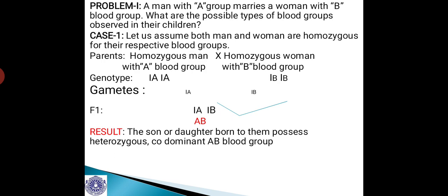Case 1: let us assume both man and woman are homozygous for their respective blood groups. Parents are a homozygous man with A blood group and a homozygous woman with B blood group. Their genotypes are IAIA and IBIB respectively. The man having A blood group will produce only one type of gamete: IA.